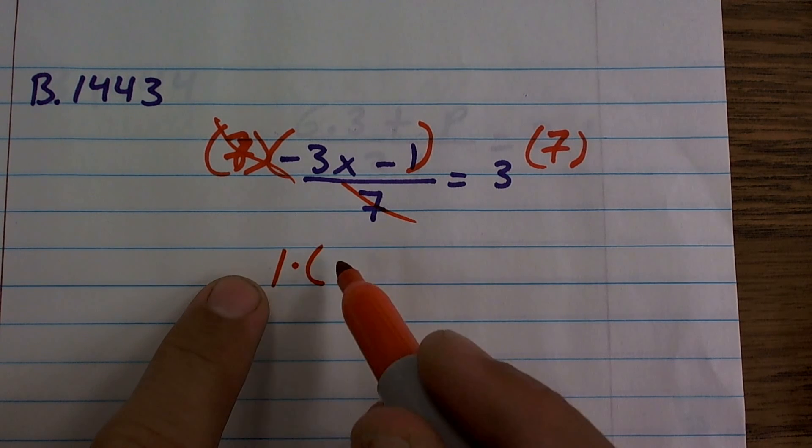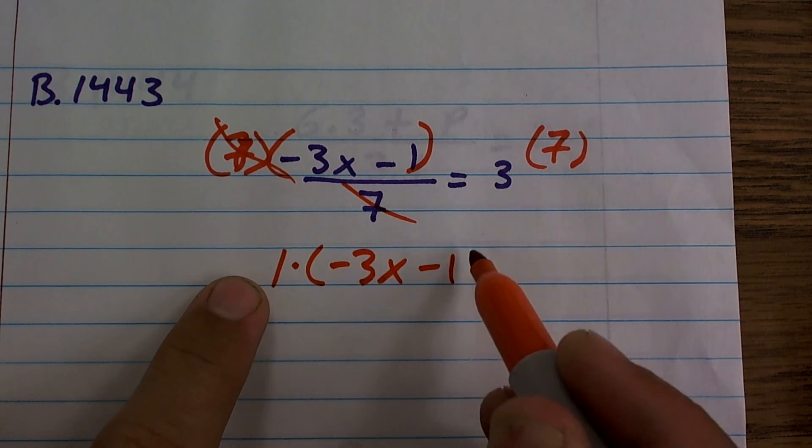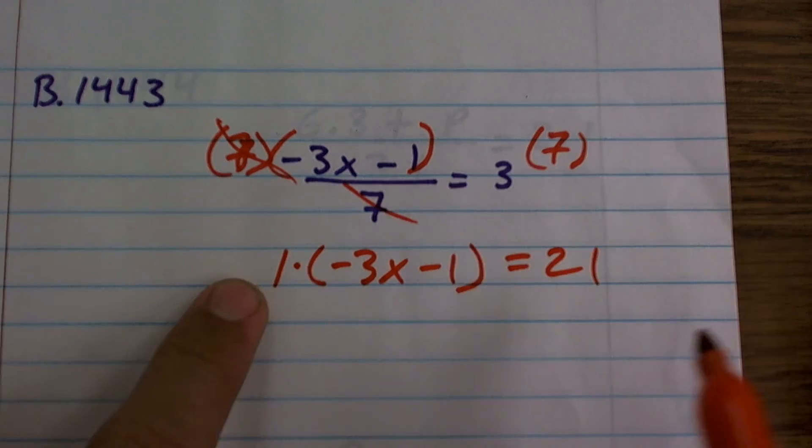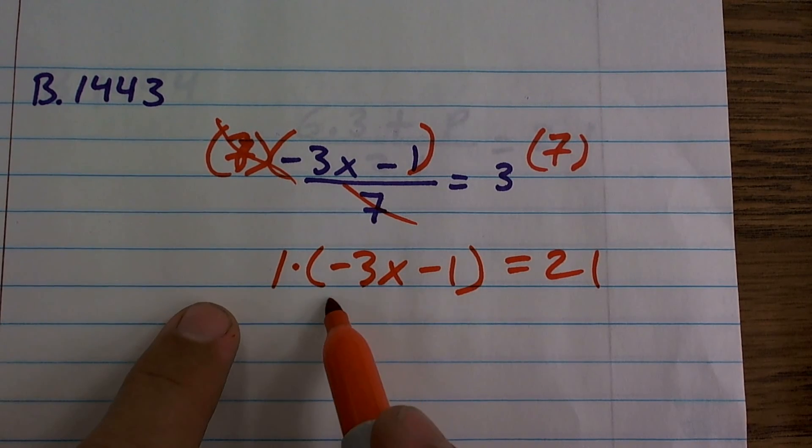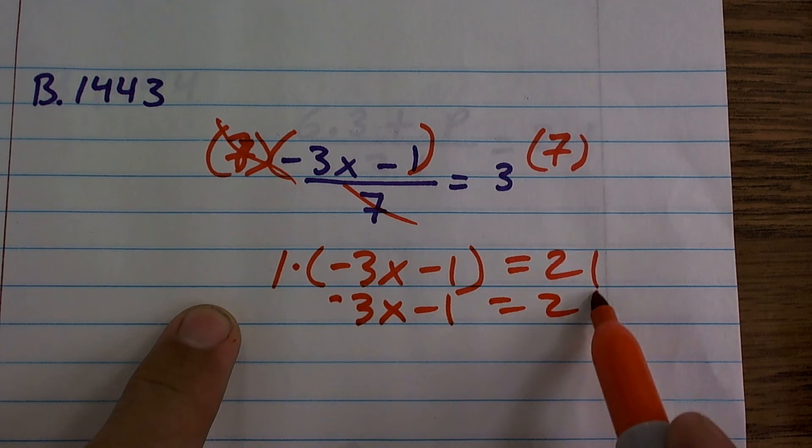So I'd have 1 times negative 3x minus 1 equals 21. Well, 1 times that is obviously just going to be negative 3x minus 1 equals 21.